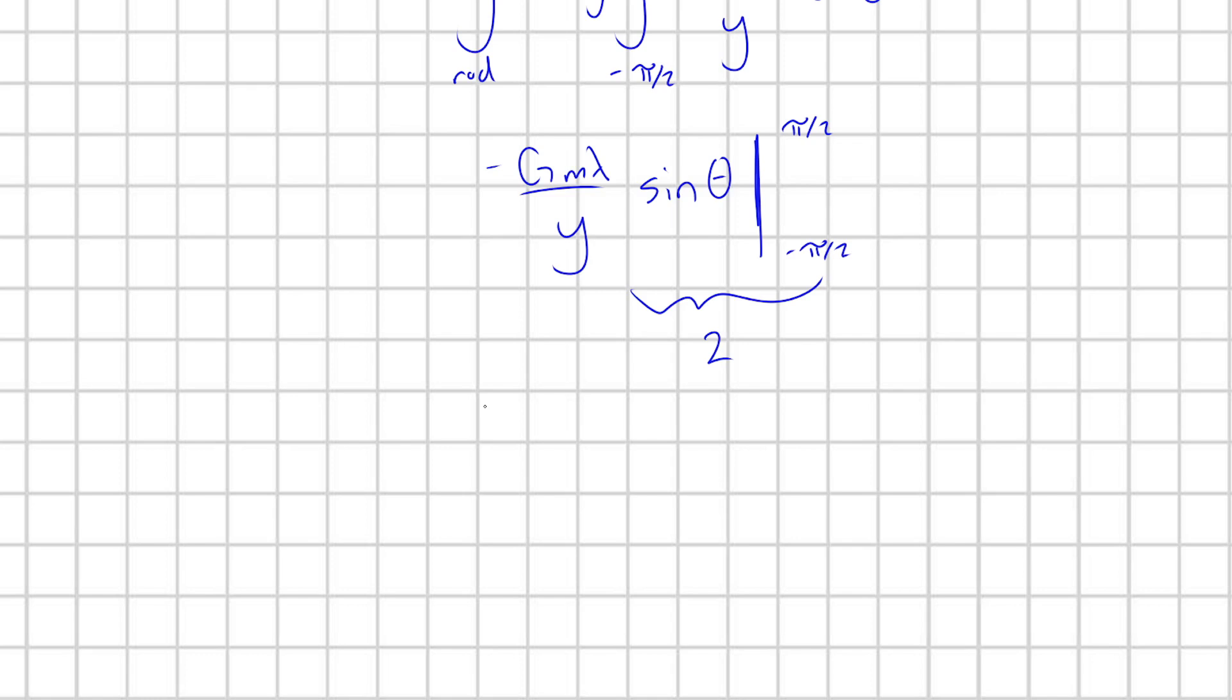And so what I'm going to have is that the total force on my mass, which purely points in the y direction, so Fy is going to be equal to minus 2 Gm lambda over y. And there we go. And again, this minus sign here, what's that indicating? It's indicating that the force on my mass is pointing downwards. I'm being attracted to the rod.